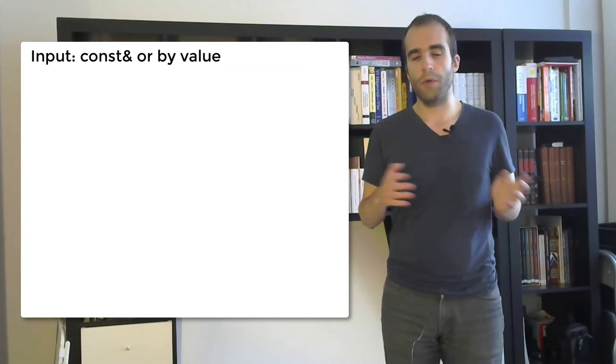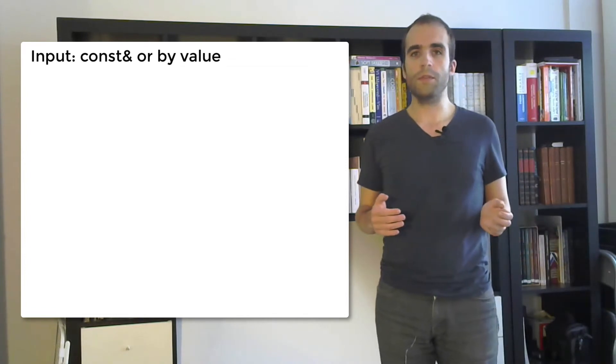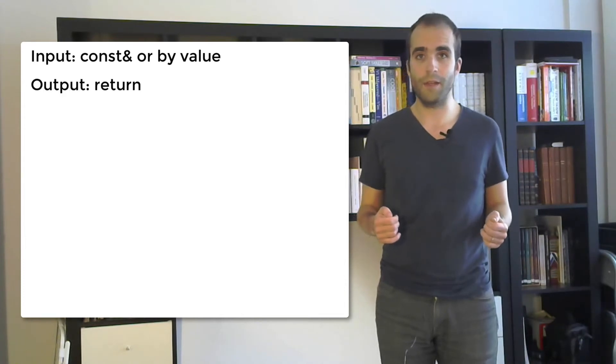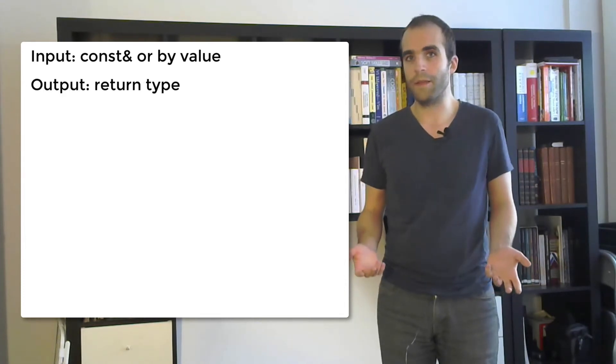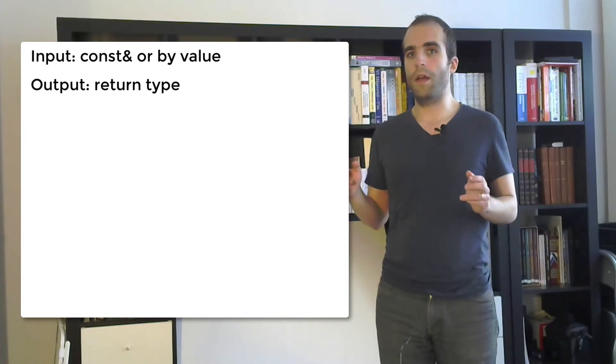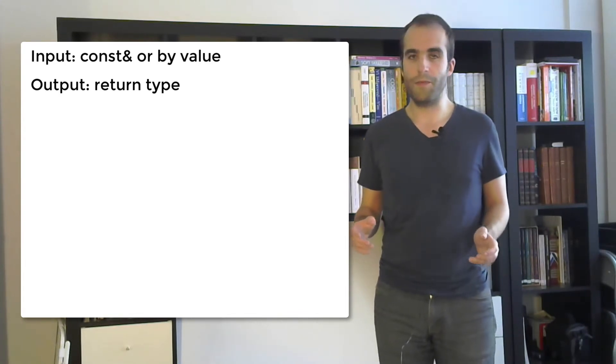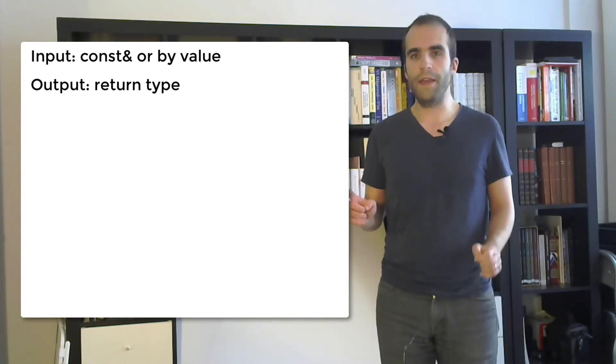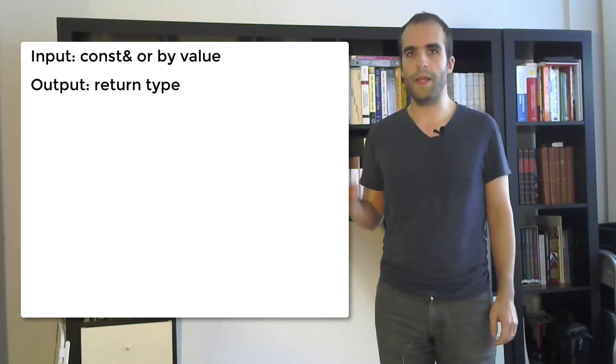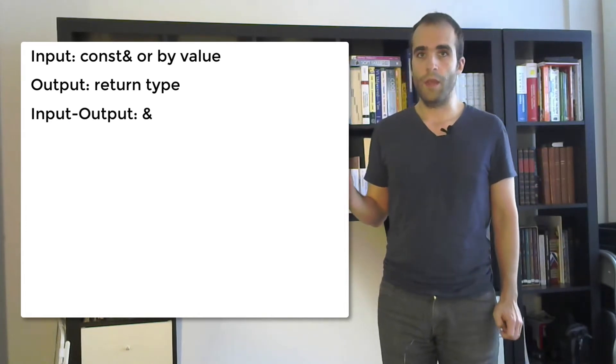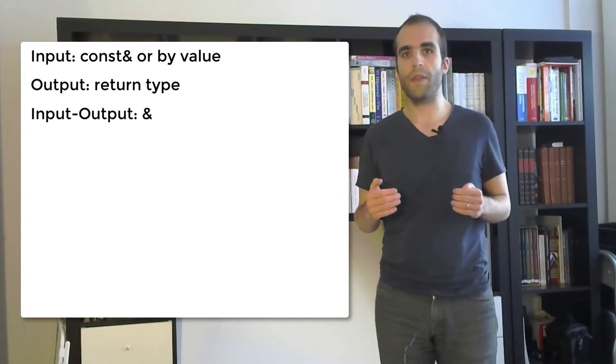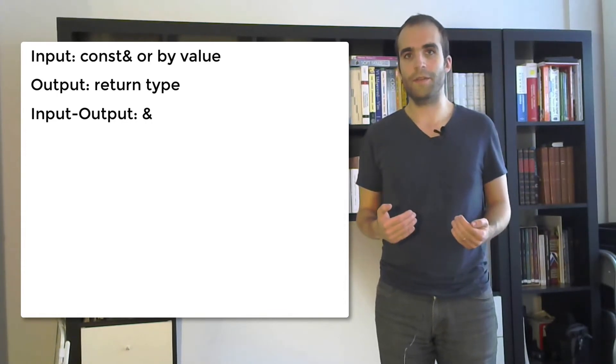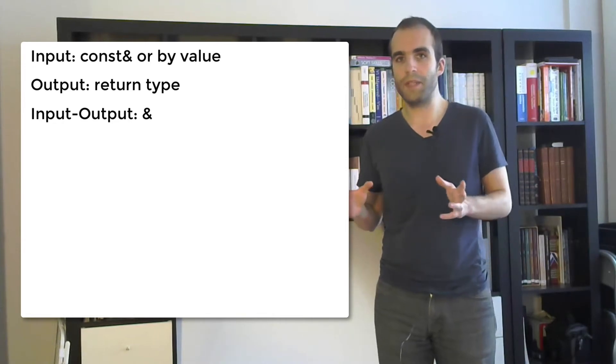Now outputs. Outputs, they come out of a function through its return type, right? That's a simple thing. And there's one last type of parameter which are both input and output. And this is expressed by a reference which is not const because this is a parameter that can be read from and written to by the function.